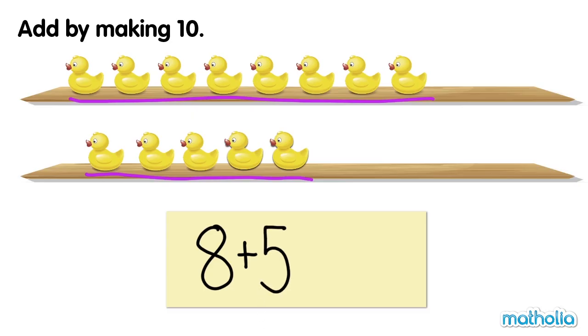Let's add the ducks by making ten. Let's move two ducks from the bottom row up to the top row. Now we have ten ducks on the top row and three ducks on the bottom row. Ten and three make thirteen.